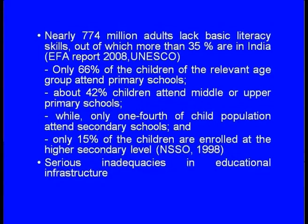In this particular study, we are going to focus our attention on GIS-based education facility planning. This approach will help us identify how we can generate information so that certain utilities can be generated by the administrators, highlighting the role of GIS in developing a planning model. It has been found that about 774 million adults worldwide are illiterate — they do not possess basic literacy skills — and out of this, 35 percent of such people live in India, as per a UNESCO report published in 2008.